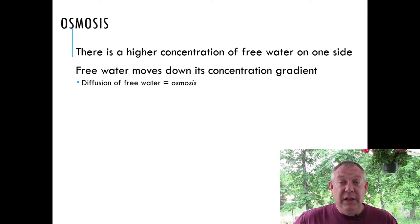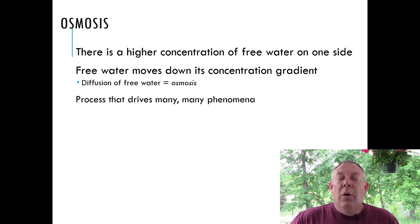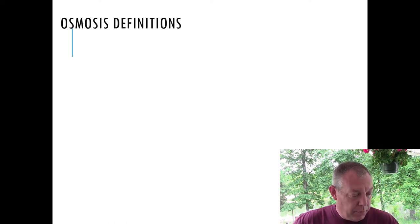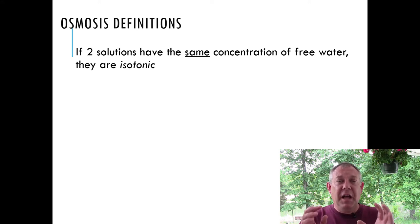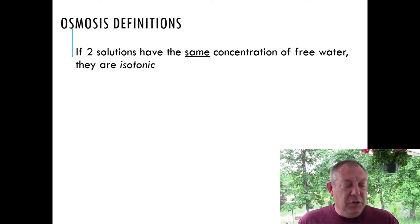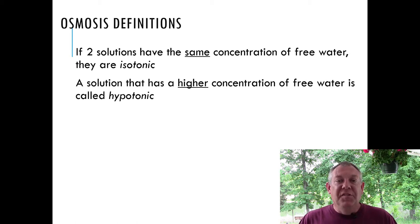So if someone gave you an exam question asking what is osmosis, a pretty good answer is: the diffusion of free water down its concentration gradient. We make a big deal about this because it's critically important to understanding many things in biology. We have to be very precise with our language. If two solutions have the same concentration of free water, they're isotonic — iso meaning same. A solution that has a higher concentration of free water is called hypotonic.